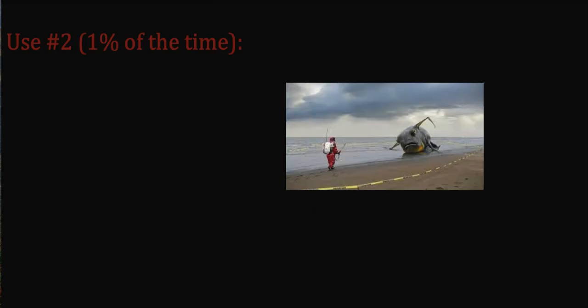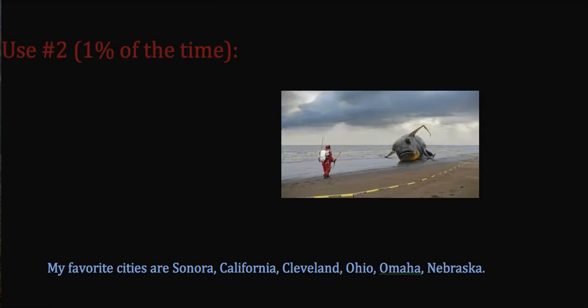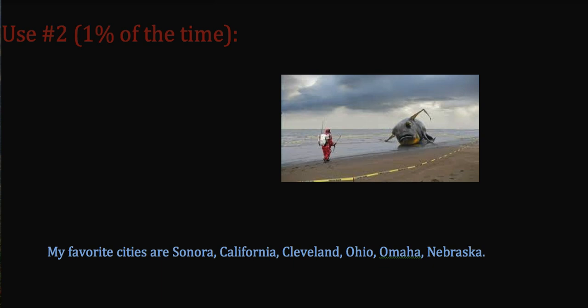That is how you use a semicolon in nearly all situations. But remember at the start of the tutorial, I said there was one very rare use of the semicolon. Write down this sentence: 'My favorite cities are Sonora, California; Cleveland, Ohio; Omaha, Nebraska.' Take a moment to think how you want to punctuate that. Do you see or feel any problems? This is likely what you wrote — and if so, you might detect some confusion.